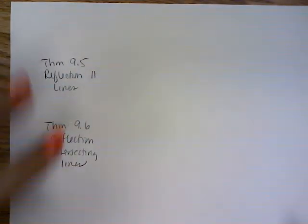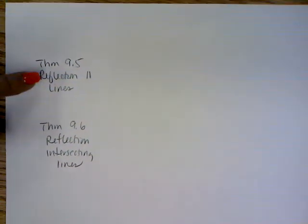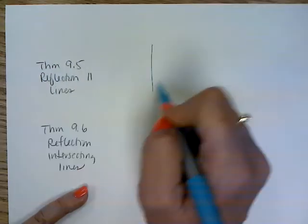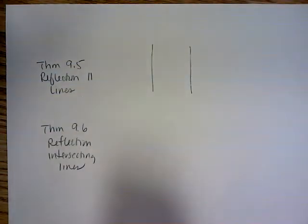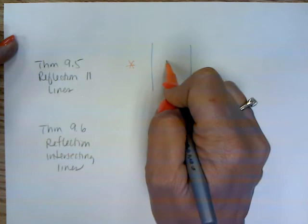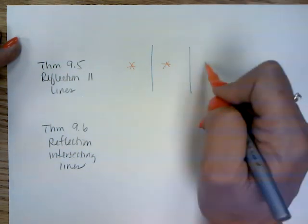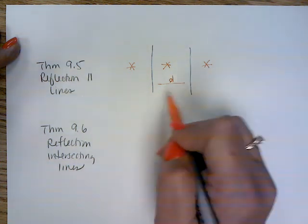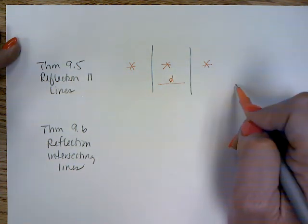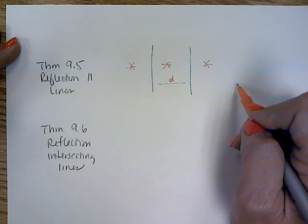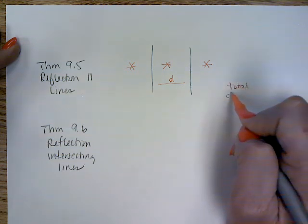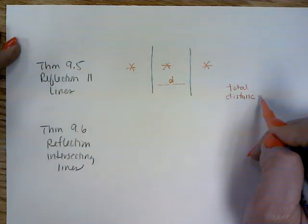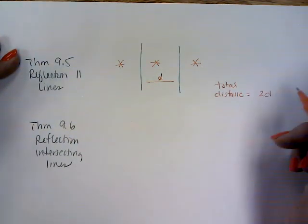And last but not least, I just want to quickly go over, you need to know theorem 9.5 and 9.6. There's a question about each. What you need to know is that, when I have the parallel lines, I have an image here that's reflected, and then reflected again over parallel lines, that the distance between the parallel lines, the distance, the total distance, sorry, the total distance from, it looks like a translation, the total distance is 2 times the distance between the parallel lines.